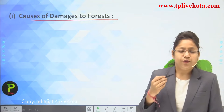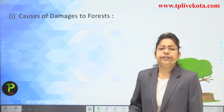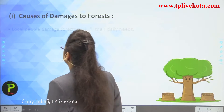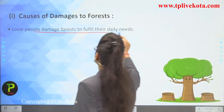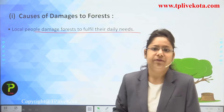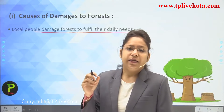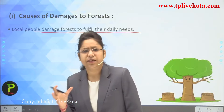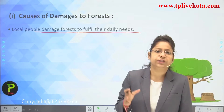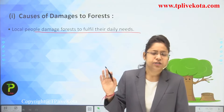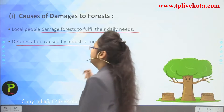The causes of damage to forests from our activities: Local people damage forests to fulfill their daily needs — cutting wood massively for cooking, taking medicinal plants, and taking fruits and vegetables in large quantities to feed their families, thereby over-exploiting resources.